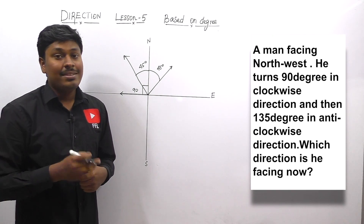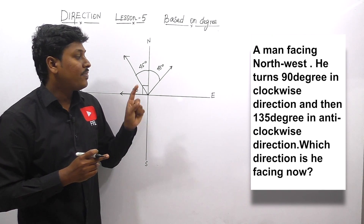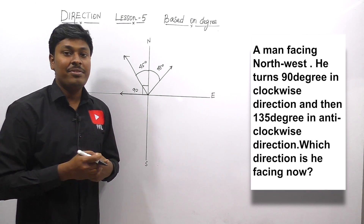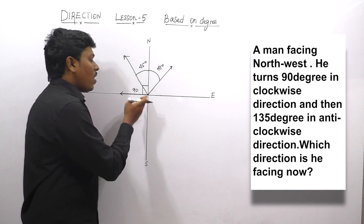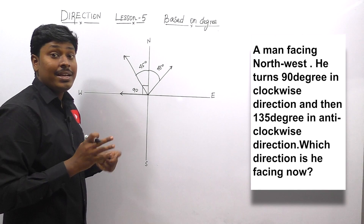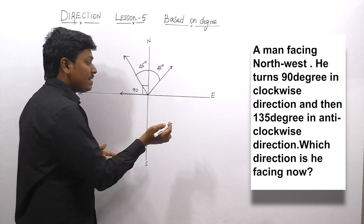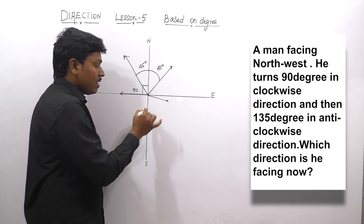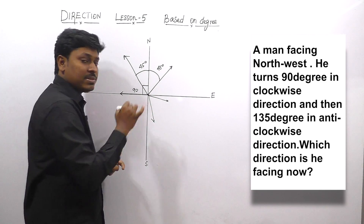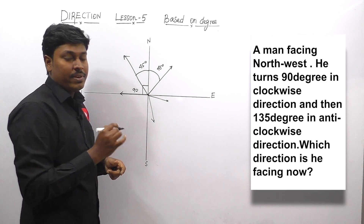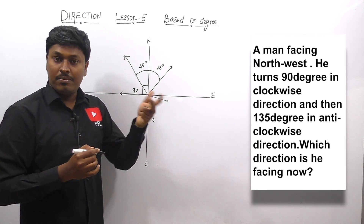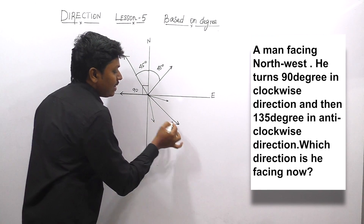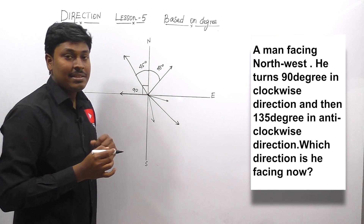In this question, the most important thing is the first line — a man is facing northwest. In many questions, you can see a man is facing southeast or southwest. But they don't give you any angle. A man is facing southeast — you can draw a line like this, and this is also southeast. So if they say a man is facing towards southeast, draw exactly at 45°. Now the man is facing southeast.